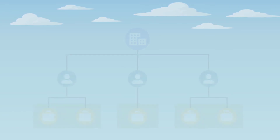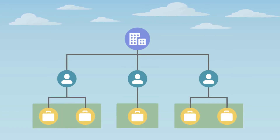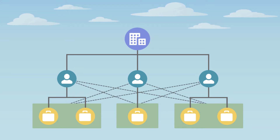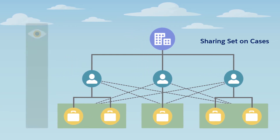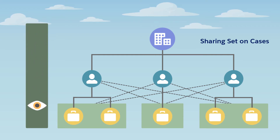In our first example, Pacifica wants to give customer users on the same account access to each other's cases. To do this, Pacifica creates a Sharing Set on the Case object, giving read access to cases owned by users of the same account. In this way, users within the same account can see each other's cases. This Sharing Set is using a direct lookup.